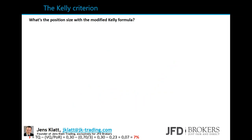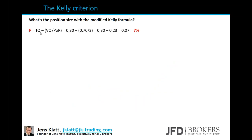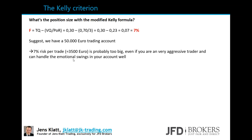Now let's optimize the position size with Kelly. The hit rate (TQ/HR) is 30% and the loss rate (VQ) is 70%. The optimal position size that creates the optimal growth of your equity here is 7%. If we have a 50,000 euro trading account, 7% risk per trade is 3,500 euros - which is still very big. Even if we're not risking 20%, 7% is still huge.